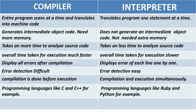the interpreter translates the program one statement at a time — statement by statement. But the compiler scans the total program as a whole, whatever statements are there, all at once. The next difference is that the compiler generates intermediate object code.